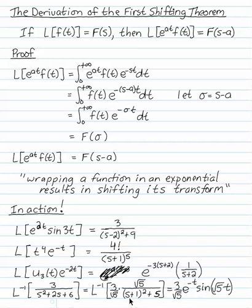s minus a, s minus negative 1. So I've multiplied the sine root 5t by e to the minus t, and I have the coefficient of 3 over root 5 out front.